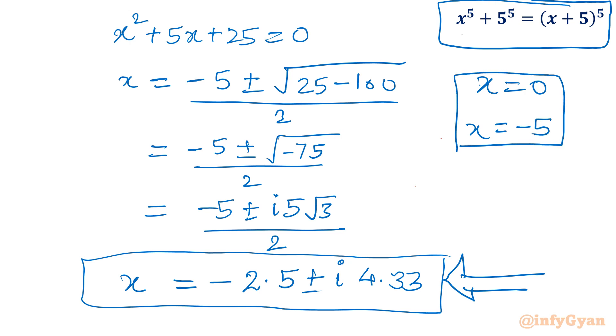Let's verify the real solutions. x=0: then 0^5 + 5^5 = (0+5)^5, which gives 5^5 = 5^5, verified.